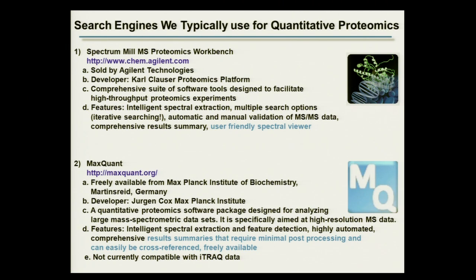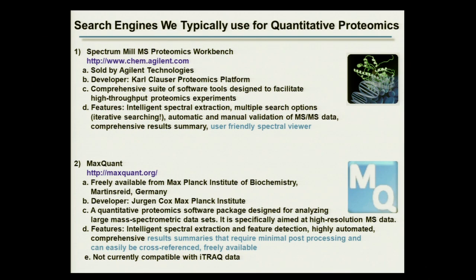SpectrumMill is commercially available through Agilent Technologies, and a big bonus for us is that it was developed by Carl in our lab. SpectrumMill is a comprehensive suite of software tools — not just for extracting MS data and searching it, but for many downstream analyses. It includes an excellent spectral viewer that allows us and our collaborators to view raw data, intelligent spectral extraction, multiple search options, and iterative searching — a capability not found in many programs — where after an initial search you can search for additional modifications or sequences.